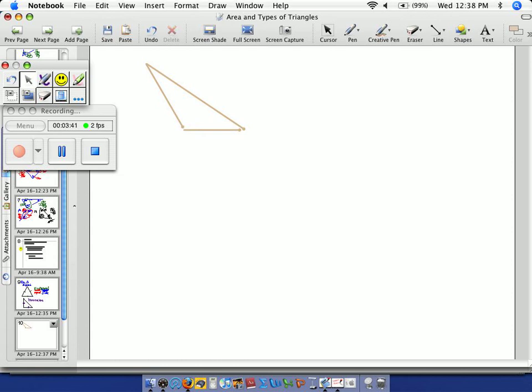A scalene triangle has three different sides. So this side is one measurement. Down below is a different measurement. And there's a third different number for this side. So you can see I use hash marks to show difference. None of them have the same hash marks. Such a triangle is called scalene.